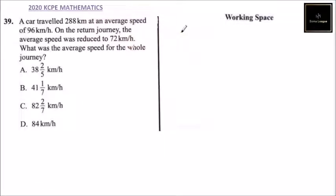Now we know that we need to find the time the car took for going and the time it took for returning the journey. So time 1 is equal to distance over speed.